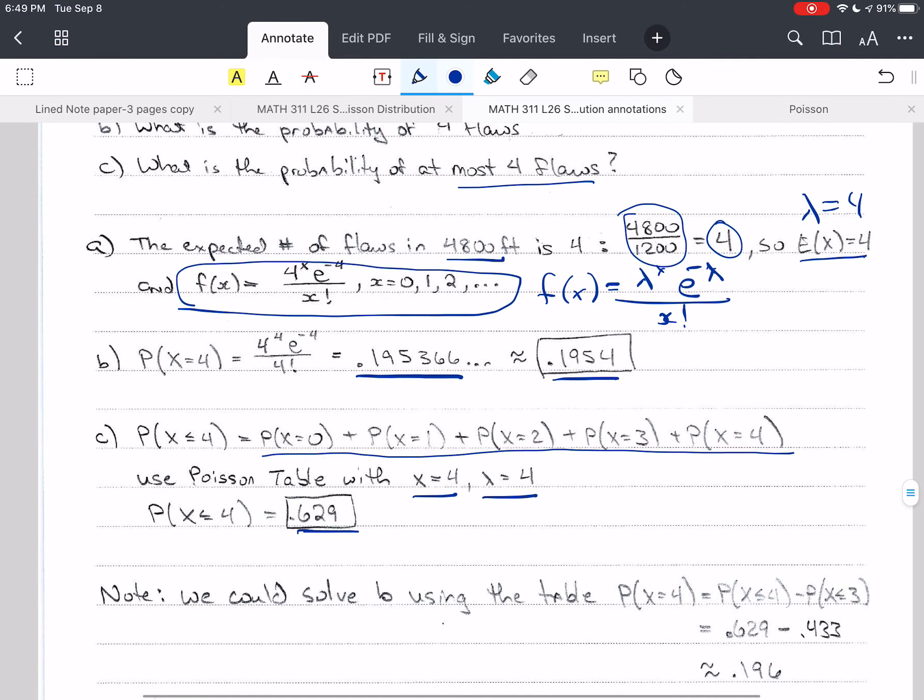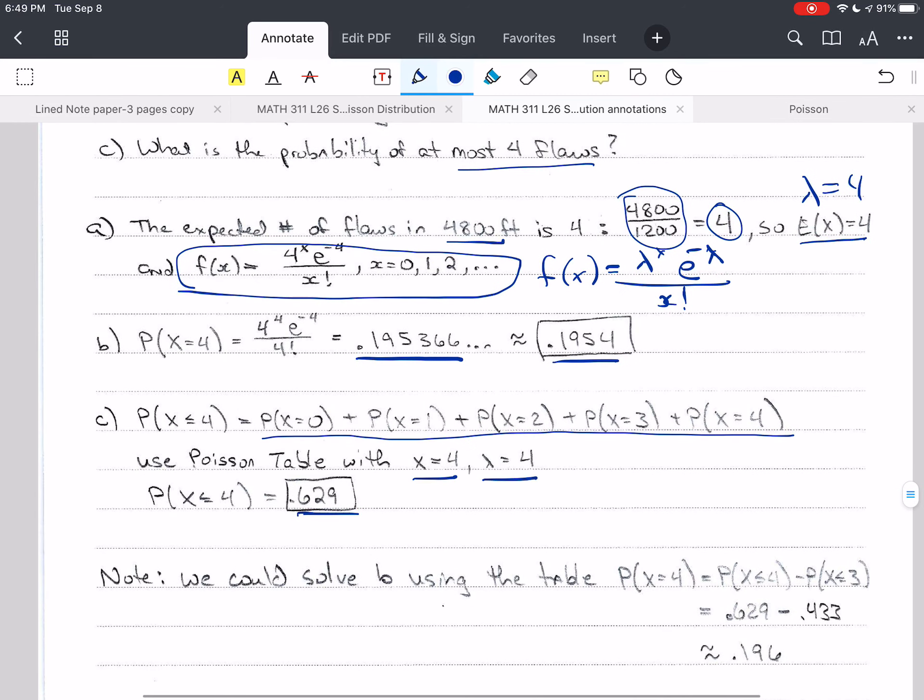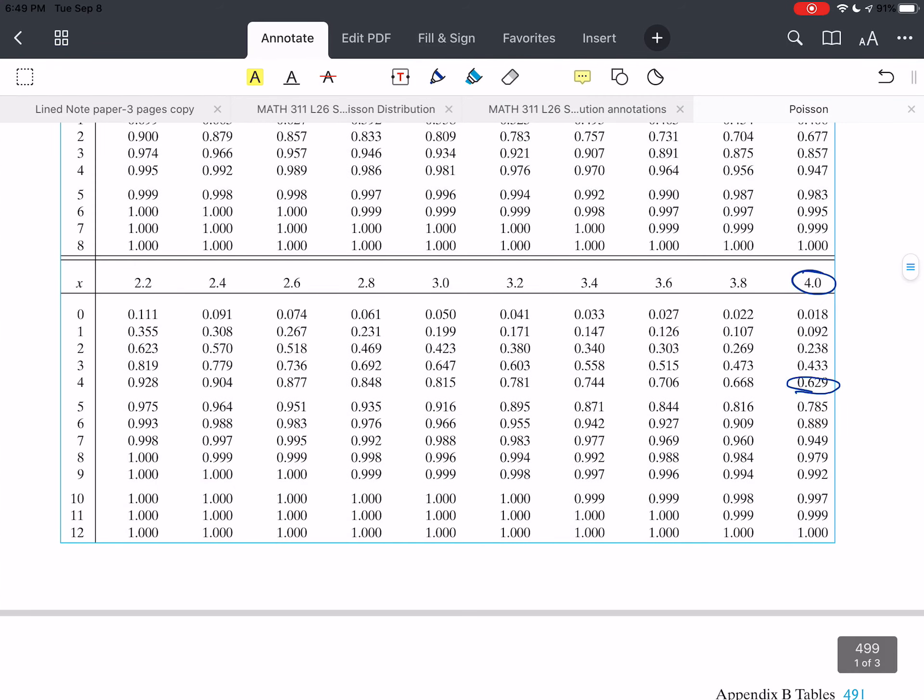Now we could solve B using the table as well. So in this case, we could use probability that X is equal to 4. That's the same thing as the probability that X is less than or equal to 4 minus the probability that X is less than or equal to 3. And so 0.629 minus 0.433 would be what we would do here. We'd subtract these two.